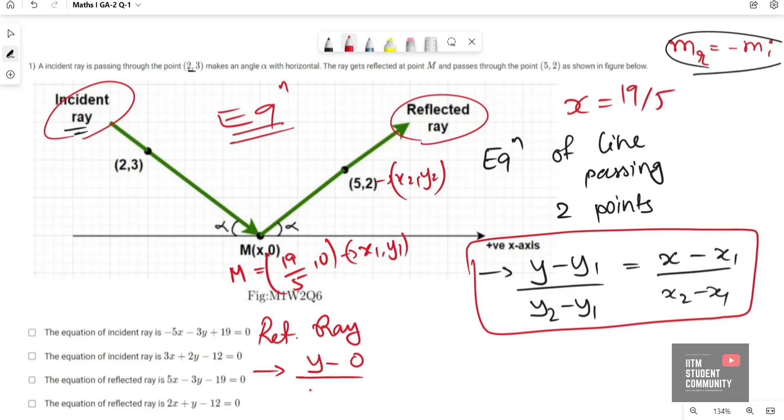Reflected ray equation will be (y minus 0) divided by (2 minus 0) equals (x minus 19/5) divided by (5 minus 19/5). Simplifying RHS we get y/2 equals (5x minus 19) divided by 6. Simplifying these we get 3y equals 5x minus 19.